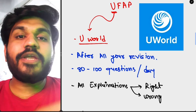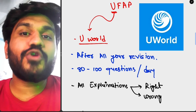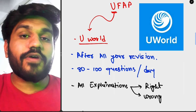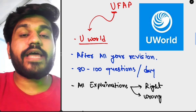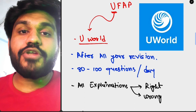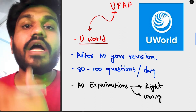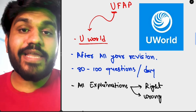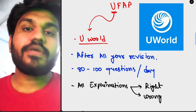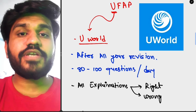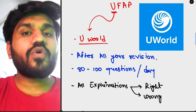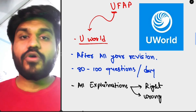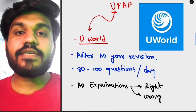Moving forward, the U in UFAP is UWorld. After you've done all your revision, then — and only then — do UWorld. It won't be worth it to do UWorld before First Aid. If you have solid knowledge from First Aid and the other resources I mentioned, UWorld will assess how much you know. You can do blocks just like the real USMLE exam. It has approximately 3,000 questions and is extremely high-yield.